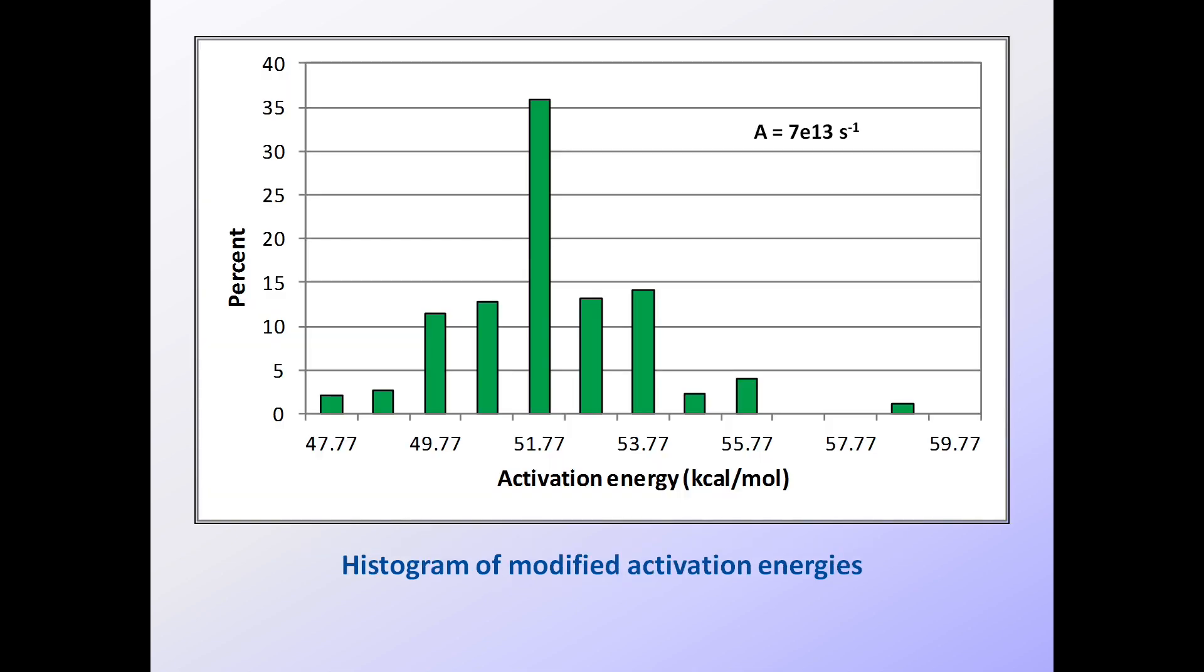When plotted in histogram form, the new non-integral activation energies on the x-axis look a little odd, but these values will give the correct results during modeling calculations. As a very good rule of thumb, a doubling of A will result in an increase in EA of 1.029 kilocalories per mole, and a halving of A will decrease EA by the same amount.